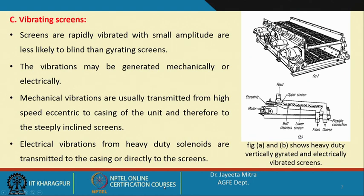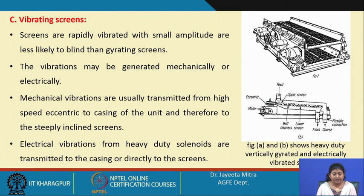Vibrating screens can be vibrated horizontally or vertically. These screens are rapidly vibrated with small amplitude and are less likely to blind than the gyrating screen. Because of this small-amplitude vibration, the screens are less likely to have small particles clog or fill in the screen mesh. That is why it is beneficial compared to gyrating screens.